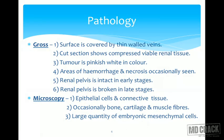From a pathological perspective, grossly the tumor surface is covered by thin-walled veins. Cut section shows compressed viable renal parenchymal tissue. The tumor is pink to white in color with areas of hemorrhage and necrosis. The renal pelvis is intact in earlier stages, but as the tumor grows, the entire pelvic collecting system is destroyed. Microscopically, one can see epithelial cells and connective tissue; occasionally fragments of bone, cartilage, and muscle fibers are found. Large quantities of embryonic mesenchymal cells are identified on microscopic examination.